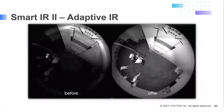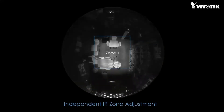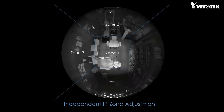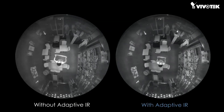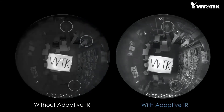The smart IR to adaptive IR technology really shines in 360 degree cameras. With this feature, you can achieve uniform illumination while eliminating hotspots and dark spots, so your camera records useful images even in challenging conditions. The supported models for this feature are the FE9191 and the FE9391-EV. In a demo, each zone is individually adjusted and you'll note the clarity of each zone given the difference in lighting — without adaptive IR, people at the outer edges are simply not visible.